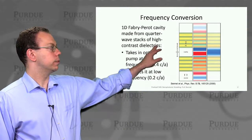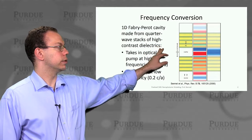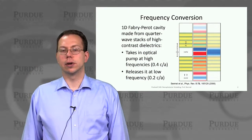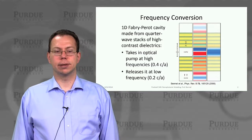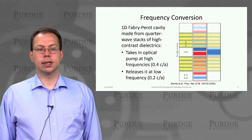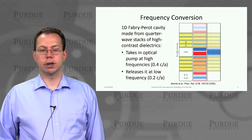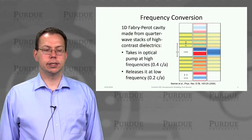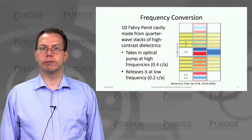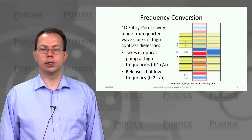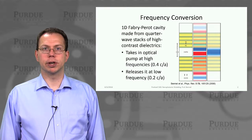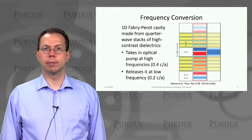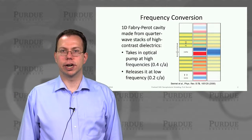This is basically a 1D Fabry-Perot cavity made with quarter wave stacks. It has high index contrast just to simplify the simulation, and it takes in an optical pump at relatively high frequencies — in reduced units of 0.4 or 0.42 pi C over A in omega. Then stimulated emission is happening at 0.2 times 2 pi C over A.